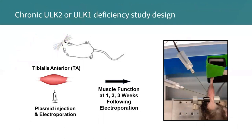To test this, we set up the same model as before, electroporating one TA of the mouse with a plasmid encoding for either ULK-2 or ULK-1 microRNA in one leg, and a non-targeting microRNA plasmid in the other as control. The difference was that instead of harvesting at one week, we would stimulate the muscle at one, two, and three weeks following electroporation and harvest at four weeks. To test the effects of chronic ULK-2 or ULK-1 deficiency on muscle function, we anesthetized the mouse, secured the knee between two pivots, secured the foot to a foot plate attached to a force transducer, and placed two needle electrodes under the skin to maximally stimulate the fibular nerve. Tetanic isometric contractions at optimal length were elicited by stimulation at 150 Hz for 300 milliseconds using the 1300A whole animal system from Aurora Scientific.